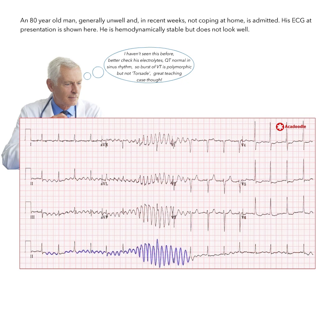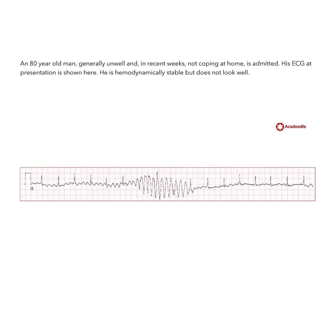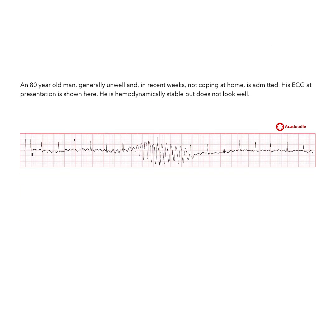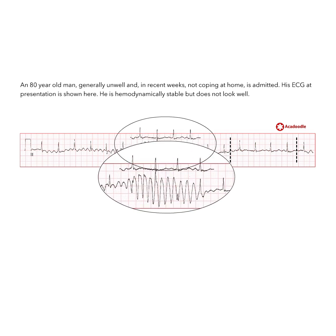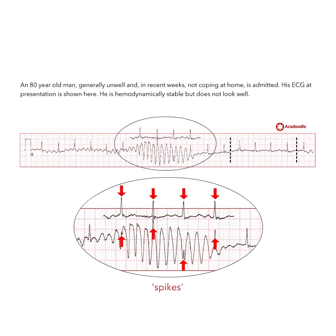This undulation of the isoelectric line is in fact artefact. If we take a portion of the readout from a part of the ECG unaffected by these distortions of the isoelectric line and use computer graphics to correct for a slight sinus arrhythmia, we can see that these spikes occur at sites where we would expect to find R-waves in this lead. These are in fact R-waves of the underlying sinus rhythm with artefactual distortion of the isoelectric line.